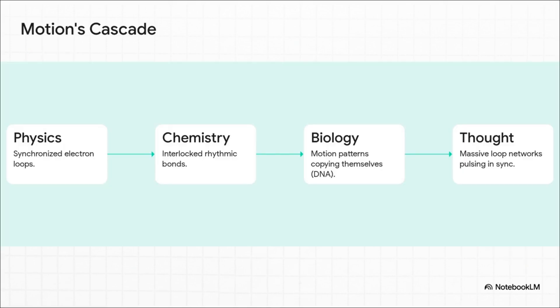And when you start to see things this way, wow, the walls we build between different sciences just dissolve. It all becomes one story. Physics? That's just a study of the simplest synchronized loops, like electrons. Chemistry? That's what happens when those loops interlock and form rhythmic bonds. Biology? Well, that's when these motion patterns get so complex they figure out how to copy themselves—hello, DNA. And what about thought, consciousness itself? Maybe it's the peak of this whole thing: massive networks of neural loops, all pulsing together in perfect sync. It's one single cascade from physics to thought.